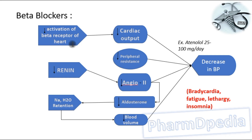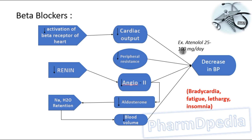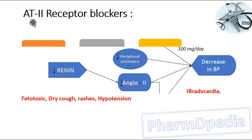Beta blockers — decreased activation of beta receptors of the heart leads to decreased cardiac output, which automatically leads to a decrease in blood pressure. These drugs end with the suffix '-lol'. Example: atenolol, 25 to 100 mg per day. Adverse reactions include bradycardia, fatigue, lethargy, and insomnia.